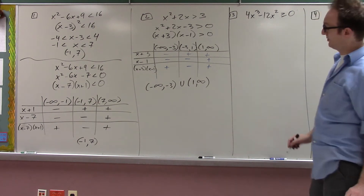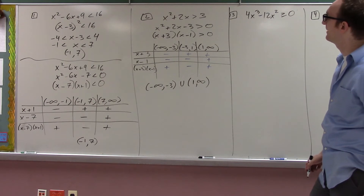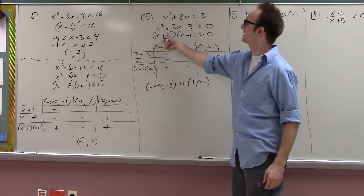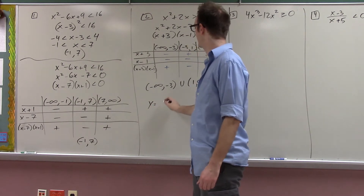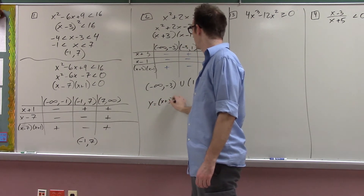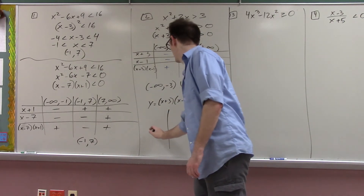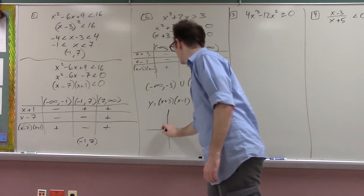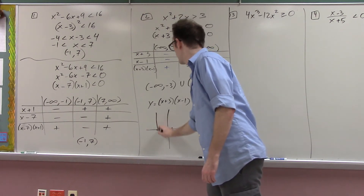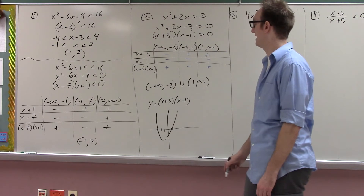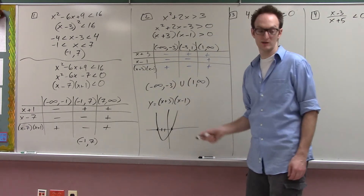There's also a faster way. The faster way is you just know what these functions look like. Consider the parabola y equals x plus 3 times x minus 1. It has a root at negative 3 and another root at 1, so the parabola just looks like that. Therefore it's going to be positive out here and out here — that's the short way.